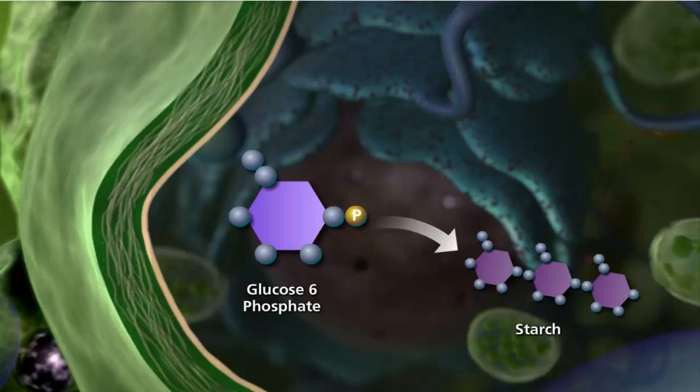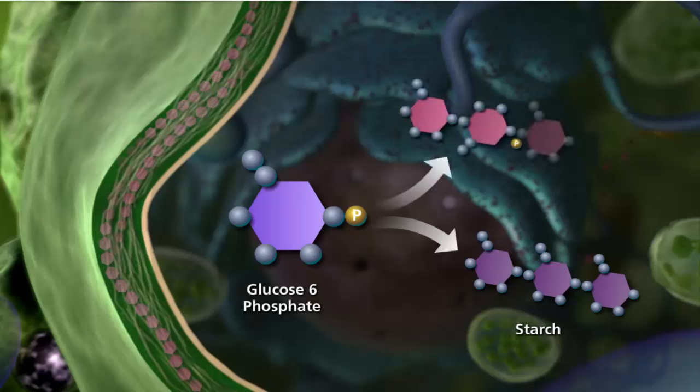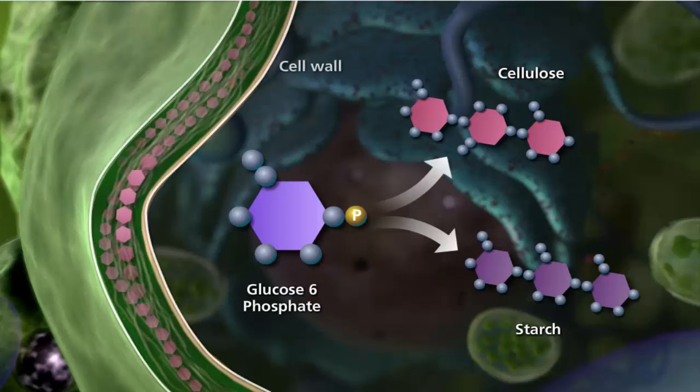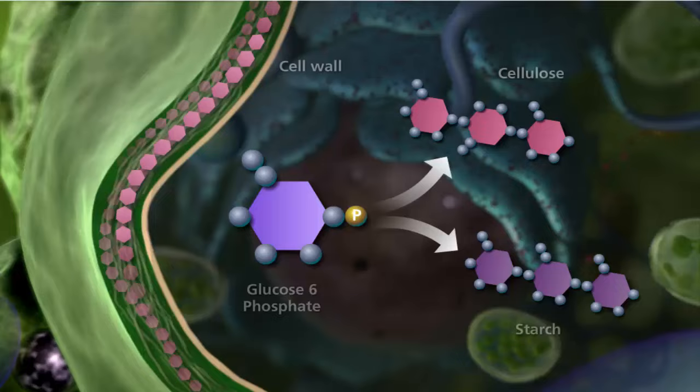Glucose can then be stored as starch to be used later for energy, or used to make other molecules such as cellulose that form the cell wall of plant cells and contribute to the biomass of the plant.